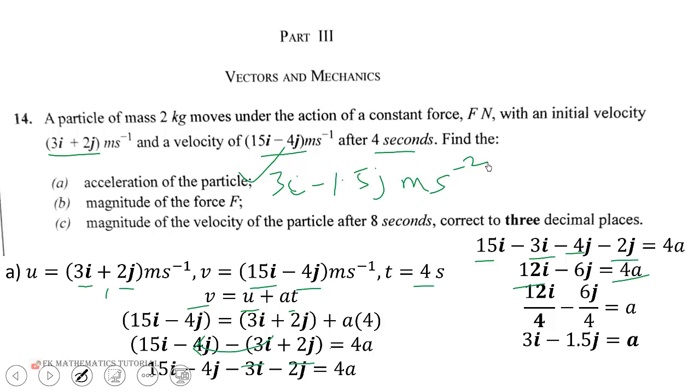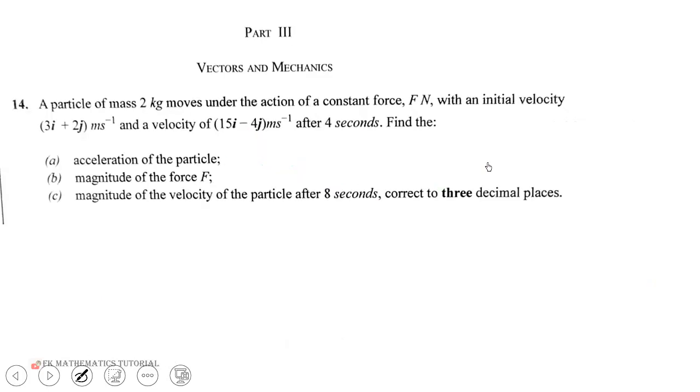Part (b): magnitude of the force after 8 seconds. We have F = ma. We know the acceleration is (3i - 1.5j) and the mass is 2 kg.